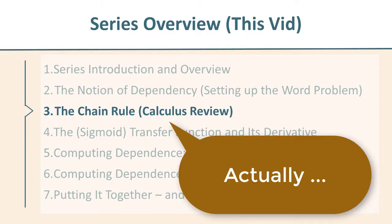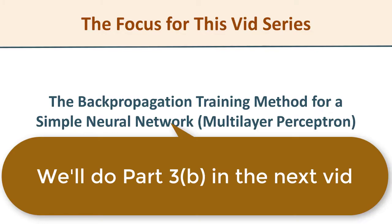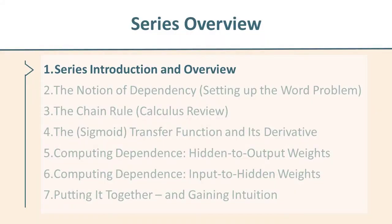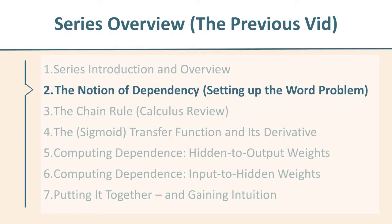This is part three of our multi-part journey into the backpropagation for neural networks. Part zero was the rationale and motivation part. One was a table of contents. Part two, which I trust you've just gone through, was setting up the word problem.